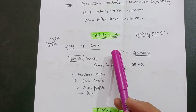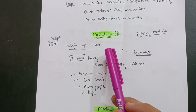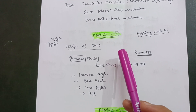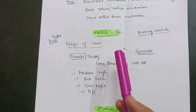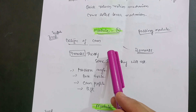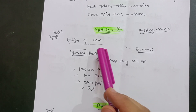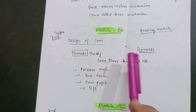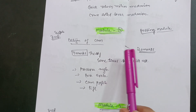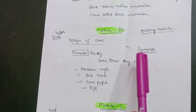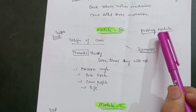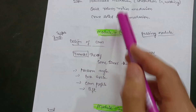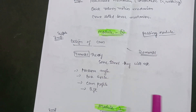If you are not very confident in cam concepts, go through any video available on YouTube. Just make 30 minutes possible so that you can see the procedure of cam profiles. It will be very easy for you. If you go through this concept, 20 marks are just in your pocket. This is the passing module and the super important passing formula in this KOM subject.